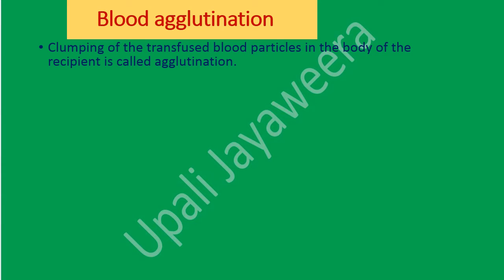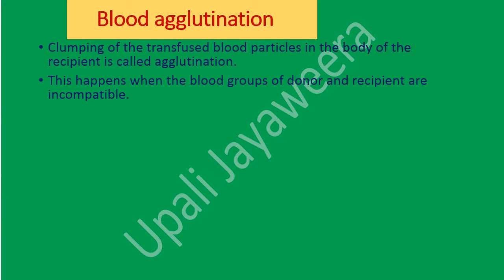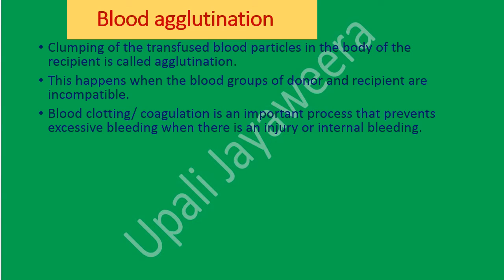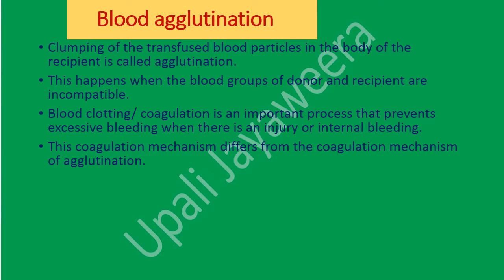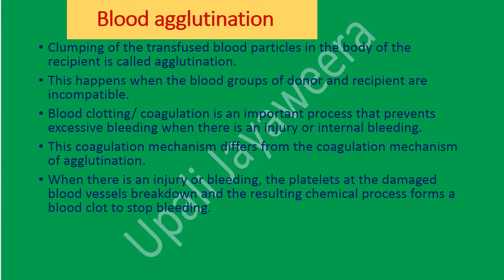What is called blood agglutination? Clumping of the transfused blood particles in the body of the recipient is called agglutination. This happens when the blood groups of donor and recipient are incompatible. Blood clotting or coagulation is an important process that prevents excessive bleeding when there is an injury or internal bleeding. This coagulation mechanism differs from the coagulation mechanism of agglutination. When there is an injury, the platelets at the damaged blood vessels break down and the resulting chemical process forms a blood clot to stop bleeding.